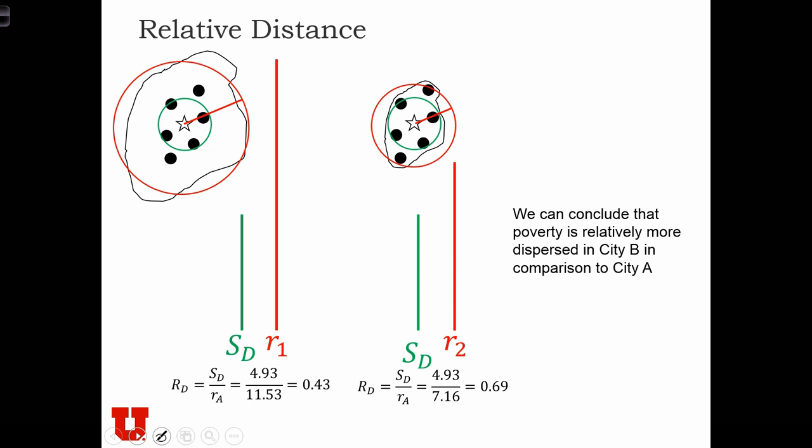So here we have the final calculations of the relative distance statistics. In either case, the length of the standard distance radius, the radius of this green circle, is 4.93. The radius that we calculated for the larger study area is 11.53, and the ratio is about 43%.